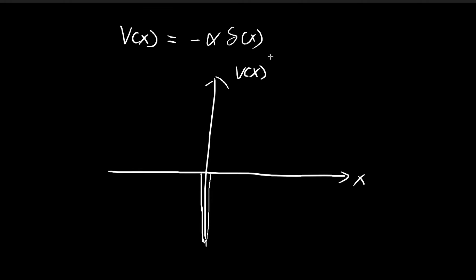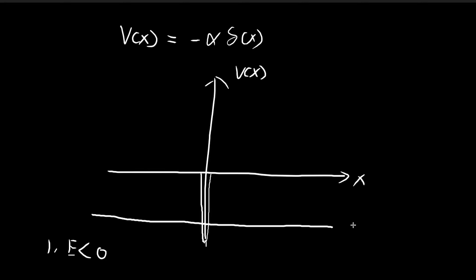We're going to have to solve the Schrödinger equation for this potential, and there are two cases to consider. The first case is when the energy level is smaller than 0 — you can imagine the energy level being somewhere below zero. For this case, we're going to get a bound state solution, because as x tends to positive and negative infinity, the potential is larger than the energy level. When E is always smaller than the potential at ±∞, we get a bound state.